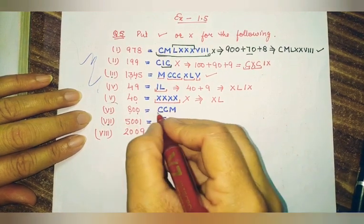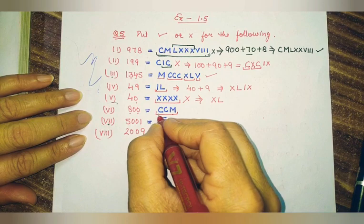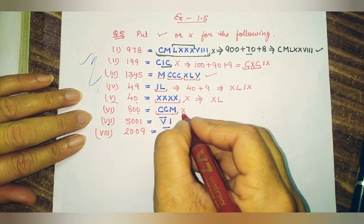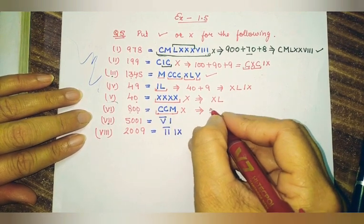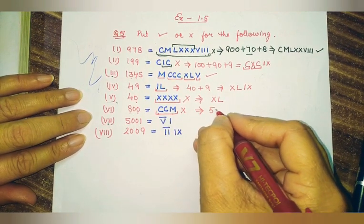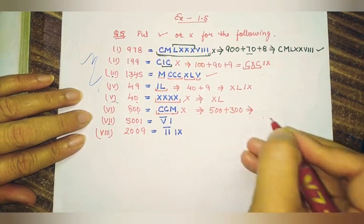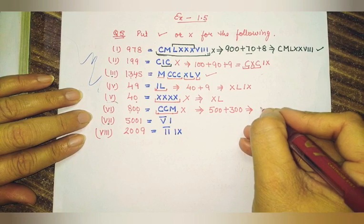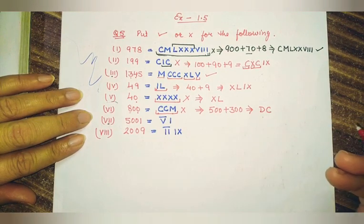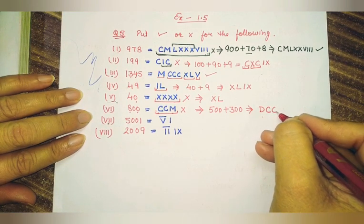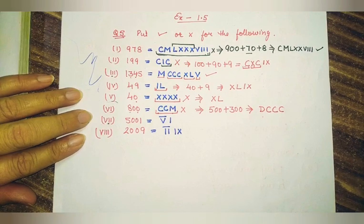Then after, 800. They have written 800 as 1000 minus 200, which is wrong. The correct way to write 800 is 500 plus 300. The symbol for 500 is D. Then D plus C gives 600, plus C gives 700, plus C gives 800. So the correct Roman numeral for 800 is DCCC.